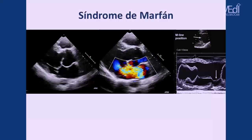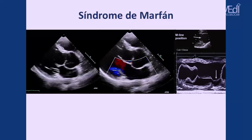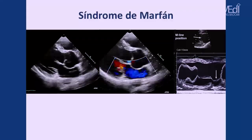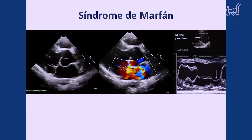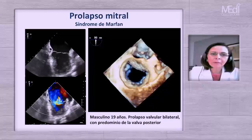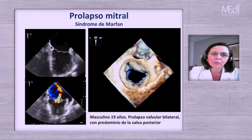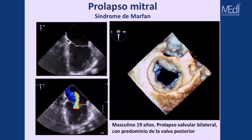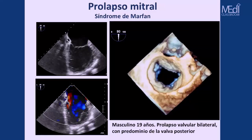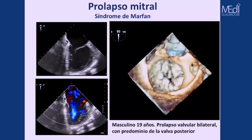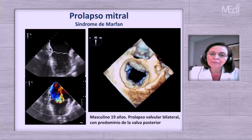En un paciente con síndrome de Marfan en ecocardiografía transtorácica se observa prolapso de ambas valvas con insuficiencia severa. El modo M sigue siendo útil para observar el prolapso de la valva anterior. Otro ejemplo de síndrome de Marfan en un paciente de 19 años muestra prolapso valvular bilateral con predominio de la valva posterior, visible en imágenes transesofágicas bidimensionales. Los chorros son diversos, observables con Doppler color, y la vista de superficie de la ecocardiografía tridimensional muestra tanto la valva anterior como la posterior con prolapsos en diferentes segmentos.